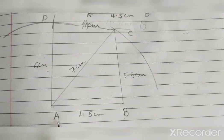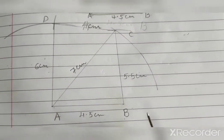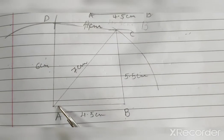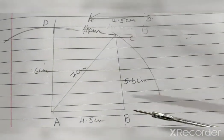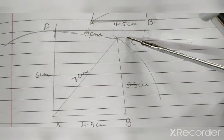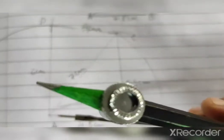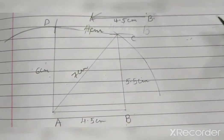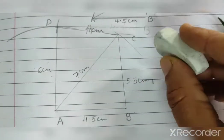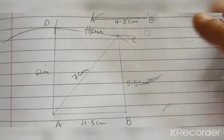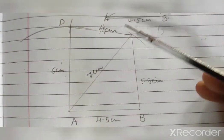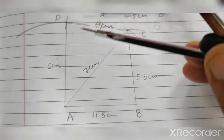Now, steps of construction you can write in your own language. First, draw with the help of ruler, line segment A-B equal to 4.5 cm. Now, A is the center; by taking radius 7 cm, draw an arc. Now, B is the center and by taking radius 5.5 cm, draw another arc which intersects the first arc at C. Join A to C and B to C. Extra arcs you can erase if you want.